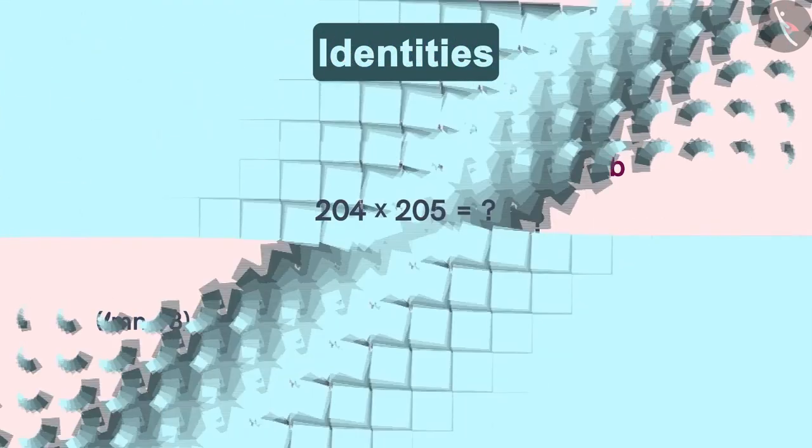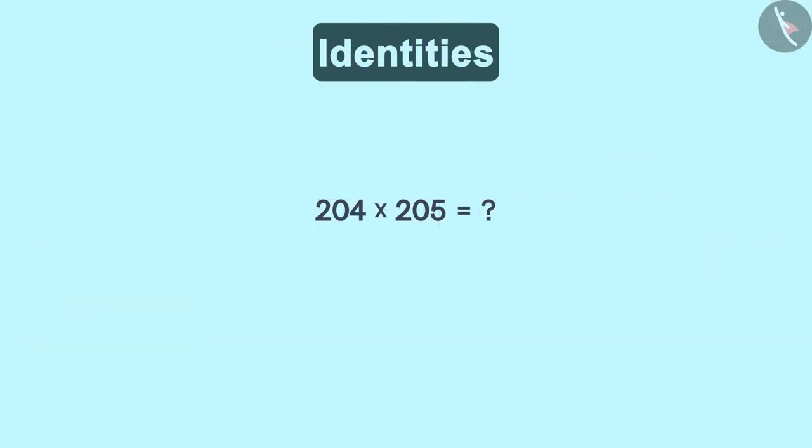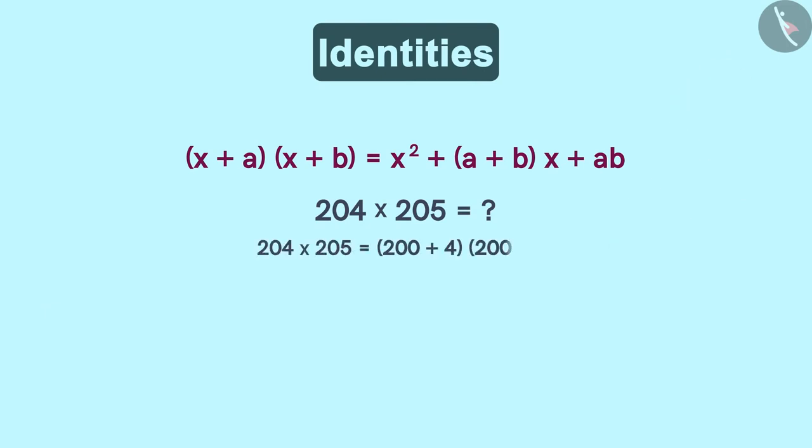Can you find the answer to this last example? In this example, how can we use this identity? In order to do this, we have to split these two numbers like this. You can notice that even after splitting both the numbers, the product remains equal.